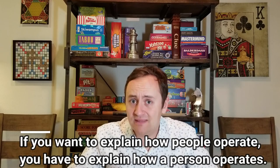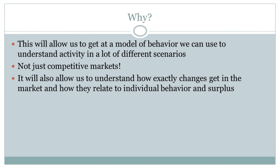Why are we going to bother with this? Well, this is going to help us get to a model of behavior, and once we can explain behavior using incentives, it's going to help us understand market activity in a lot of different scenarios. The supply and demand model is specifically a description of competitive markets, and the modern economy has fewer and fewer competitive markets all the time — so there are lots of markets this just doesn't explain that well. But once we break down the parts and understand individual behavior, we can build it back up in ways that are more flexible, applying even to behavior that doesn't take place in a market.